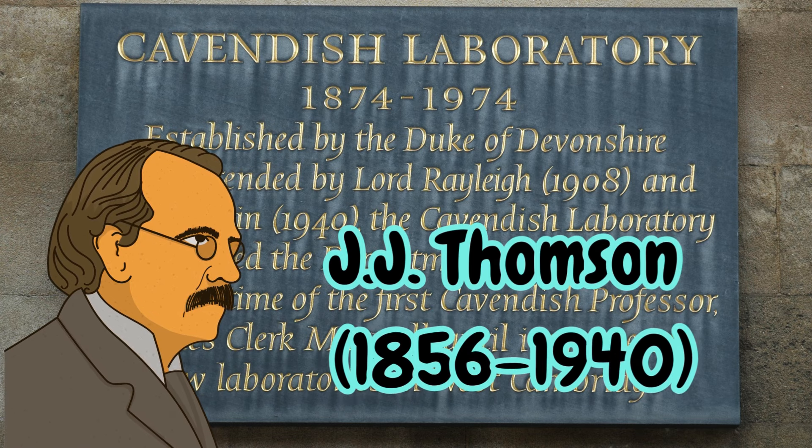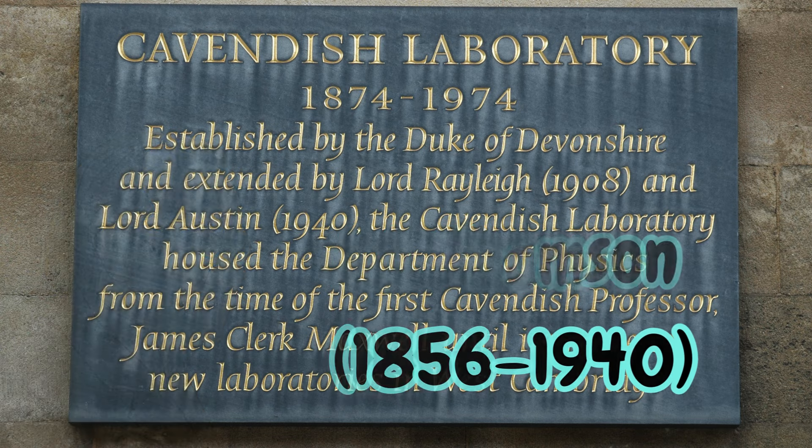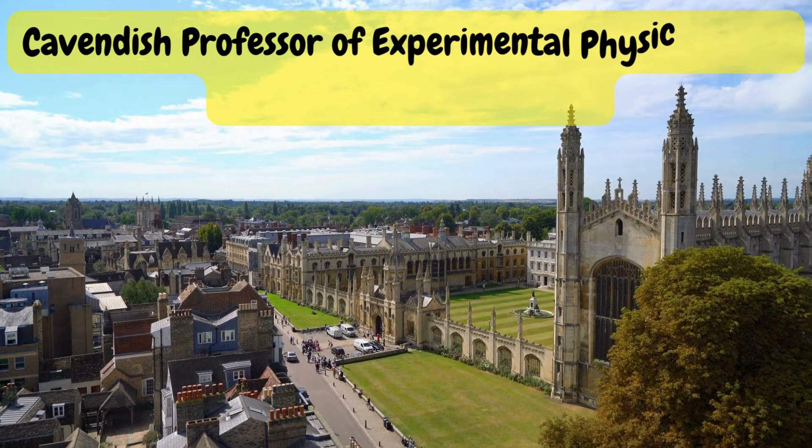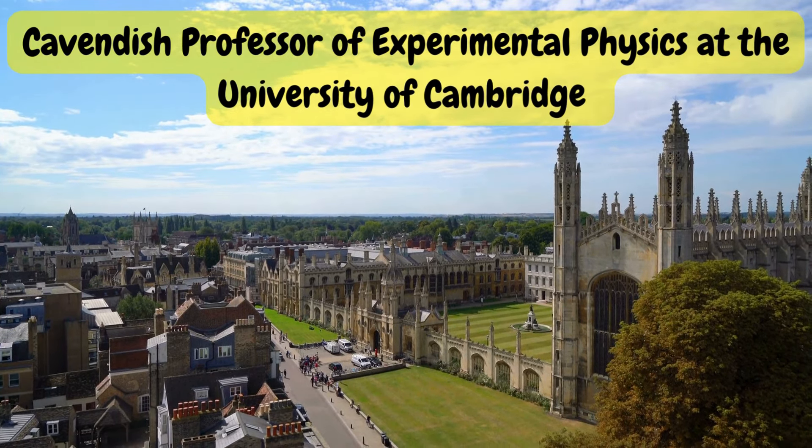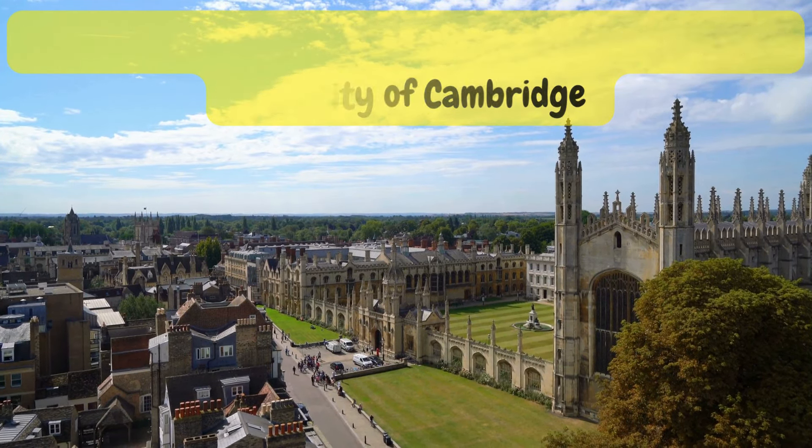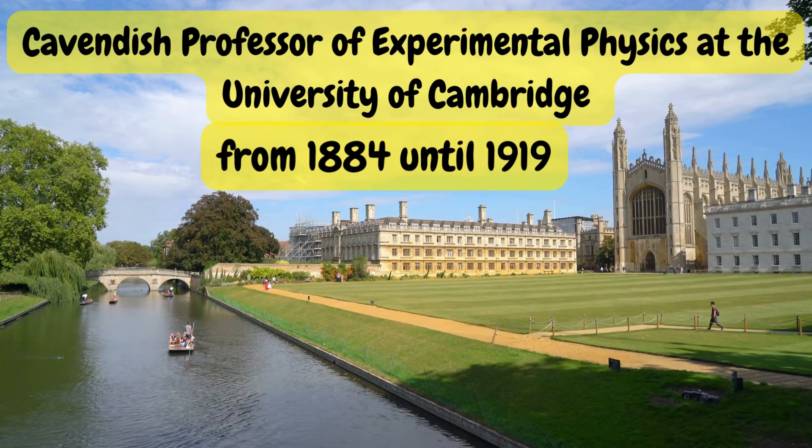The English physicist J.J. Thompson (1856 to 1940) was the Cavendish Professor of Experimental Physics at the University of Cambridge from 1884 until 1919.